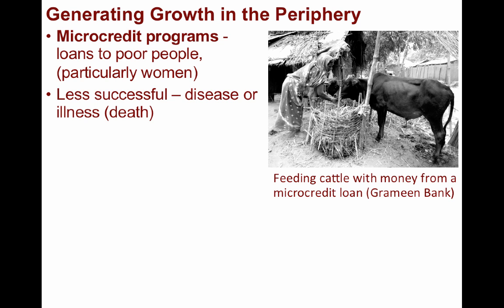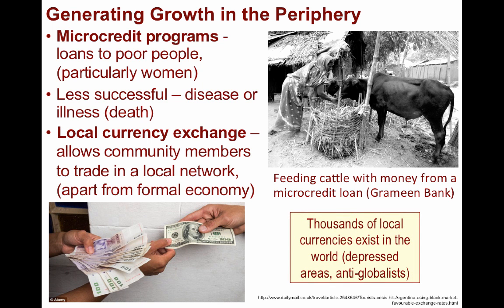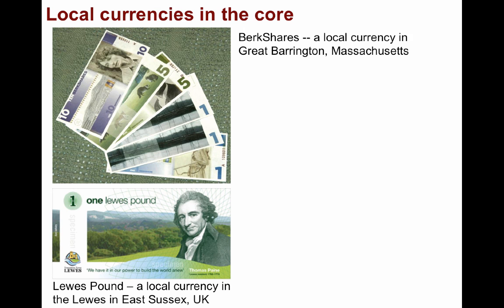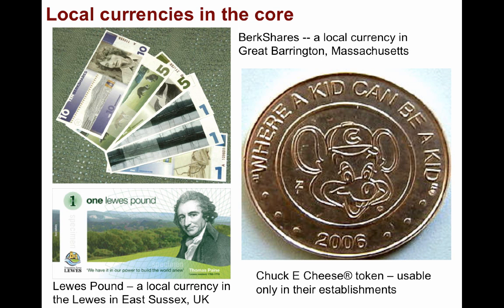In many cases, peripheral economies are unstable. As a result, there are thousands of local currency exchanges throughout the world in which members of a local community are able to trade services or goods in a local network separated from the formal economy. A typical setup is where you would receive 11 local bills for 10 national bills, incentivizing people to use the local currency and keep more of their money spent in their area. The vendors can then exchange the local bills for actual currency at a participating bank. These currencies can also be used in the core, in particularly liberal regions where people are more anti-globalist and prefer to live more locally, as in the Berkshires, Massachusetts, or in East Sussex, UK. Perhaps all of you have experienced local currency at Chuck E. Cheese's, where you can exchange real money for tokens that can only be used in their establishments.